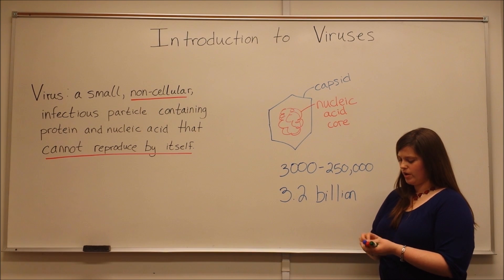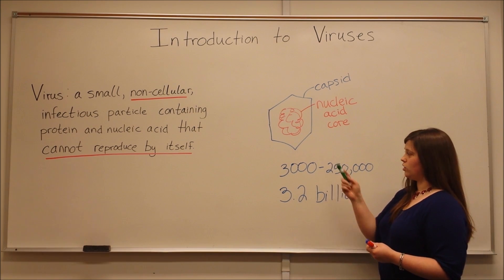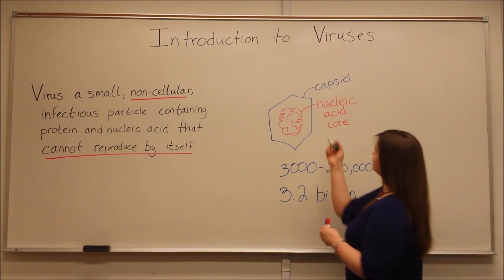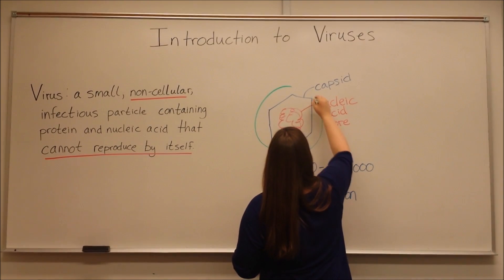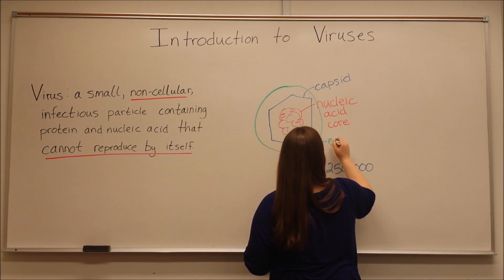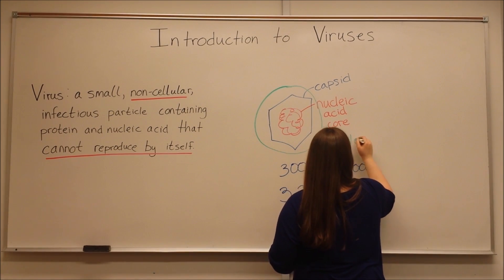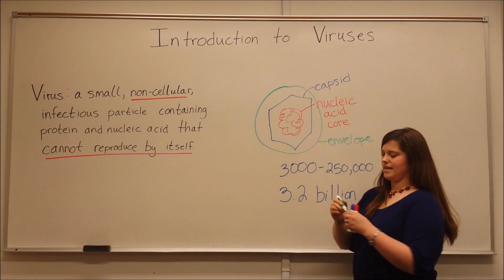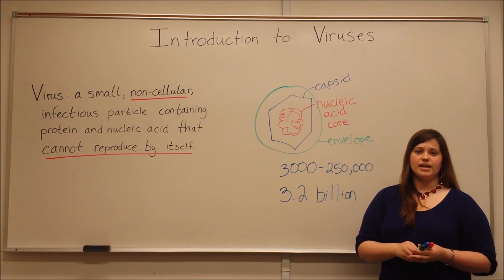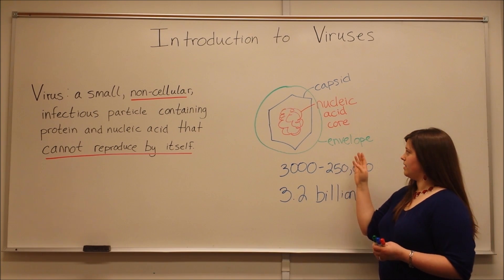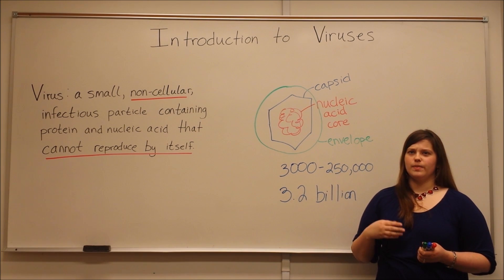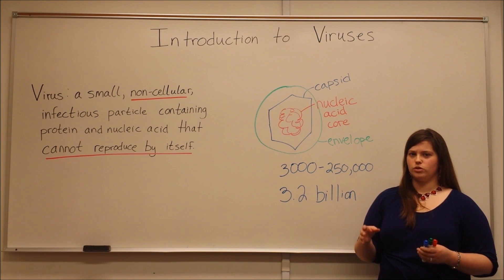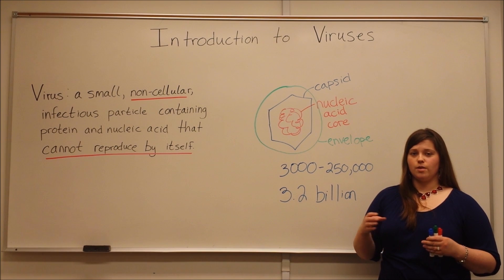Now also, some viruses have an additional component called an envelope. The envelope is made of lipids, carbohydrates, and proteins. And the envelope is important because it can actually help to mask the virus from the immune system.